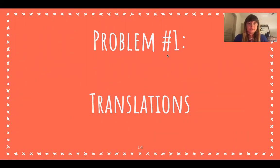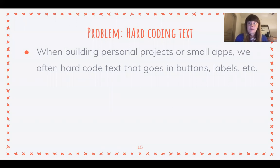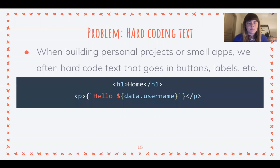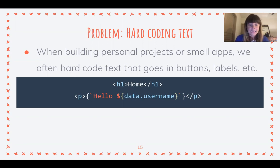The first problem is translations. The very definition of internationalizing your application is to not hard-code something to a language or region, so obviously the first thing is not hard-coding text. When you're building a personal project or something small you often just type your English words right into your HTML — that's fine for small apps, but we shouldn't do it for larger scale applications. Hard-coding text is something as simple as having the English right in the HTML; if we want to translate to Spanish in the future, we'd have to rip out all the English, which is a huge hassle.